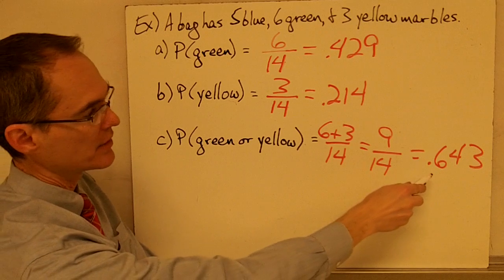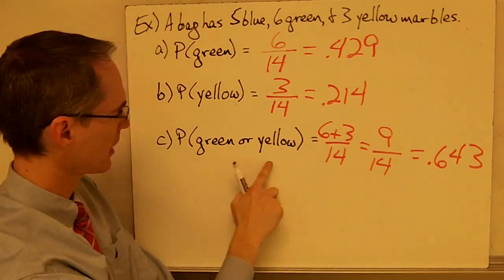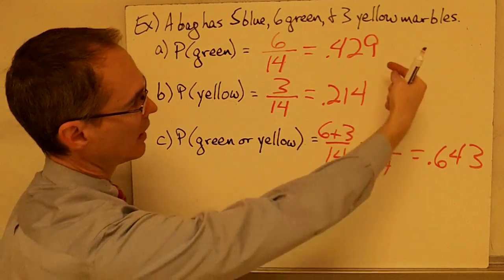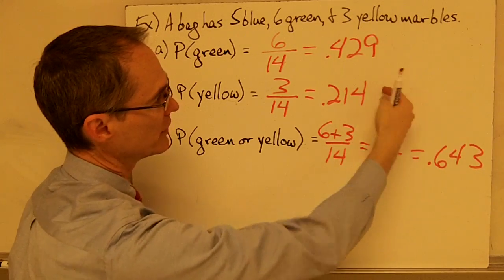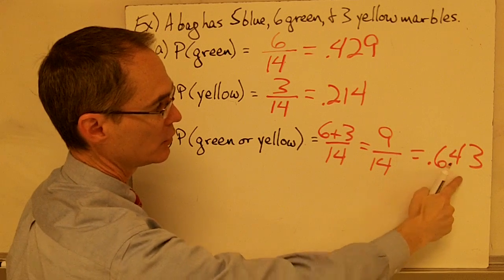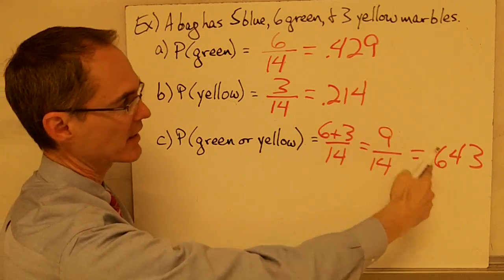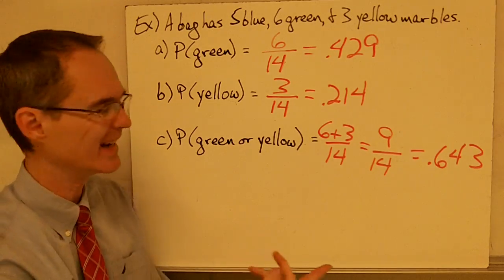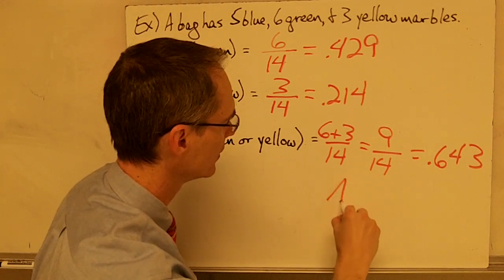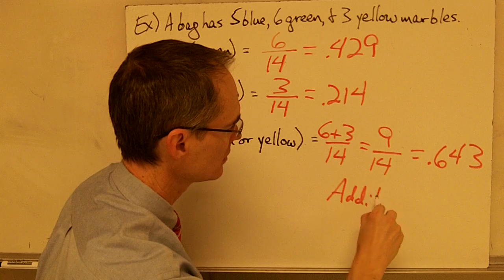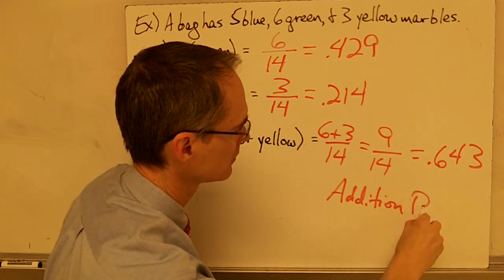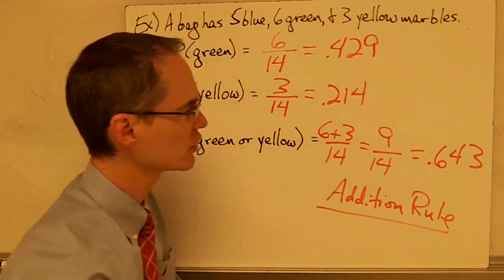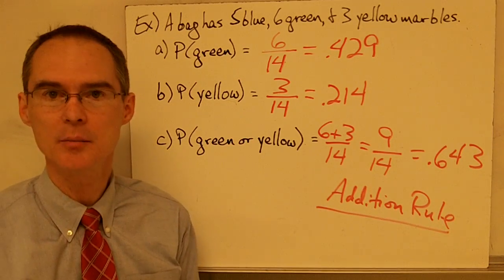You may notice that the probability of drawing a green or yellow marble, .643, is actually the sum of the two individual probabilities. If you add the probability of green and the probability of yellow, you get .643. That's actually another way to calculate this probability, and it's called the addition rule. We'll talk about the addition rule in more detail a little bit later.